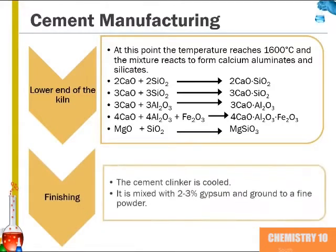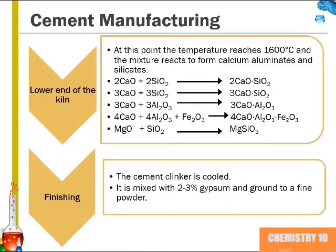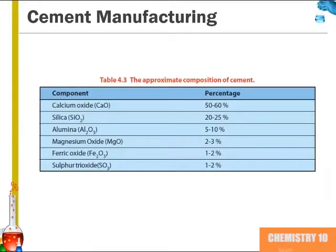In the finishing step, the clinker is cooled and mixed with 2–3% gypsum and ground into a fine powder. The final composition of cement is around 50–60% calcium oxide, 20–25% silica, 5–10% alumina, 2–3% magnesium oxide, 1–2% ferric oxide, and 1–2% sulfur trioxide.